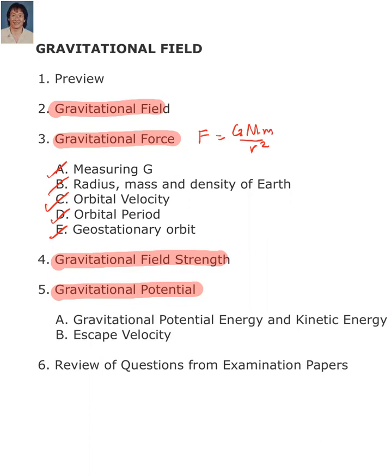An object placed in a gravitational field will have gravitational potential and gravitational potential energy. And if the object undergoes circular motion, it will have kinetic energy as well. We will use energy considerations to calculate the escape velocity, which is the minimum velocity an object must be projected from the surface of a planet so that it can escape from the gravitational field of the planet.